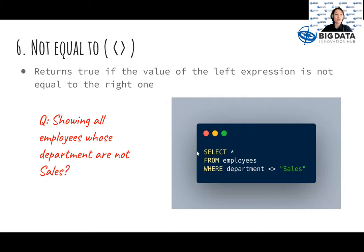Finally, by using not equal to which returns true if the value of the left expression is not equal to the right one. For example, we can see here all employees information who do not belong to the sales department are returned.